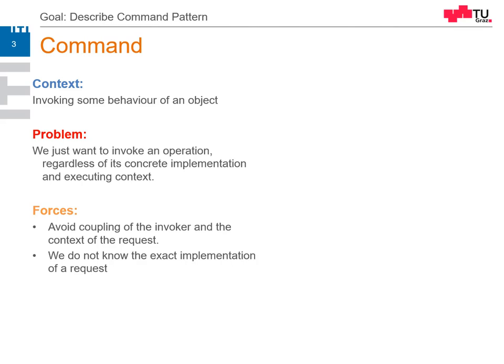Sometimes we don't know the exact implementation — we want to call arbitrary commands, similar to the strategy. Then maybe we want to undo a specific command. A strategy cannot be undone; it's just a method call and when it's done, it's done. A command, knowing its context and its state, could potentially be undone by reversing the operations or by storing a state before and a state after the execution.